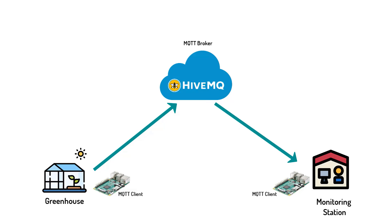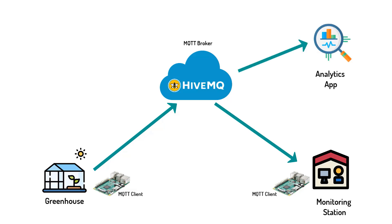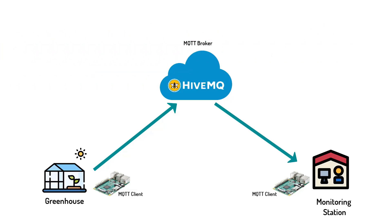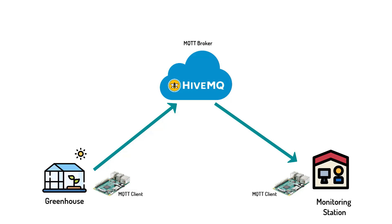Here's the thing — we do not want our greenhouse remote monitoring system to be a standalone MQTT system. Instead, we want our greenhouse information to be automatically discoverable by other Industry 4.0 applications that may be interested in it. Therefore, we're going to use the MQTT Spark Plug B specification, which is also supported by our HiveMQ Cloud MQTT broker.